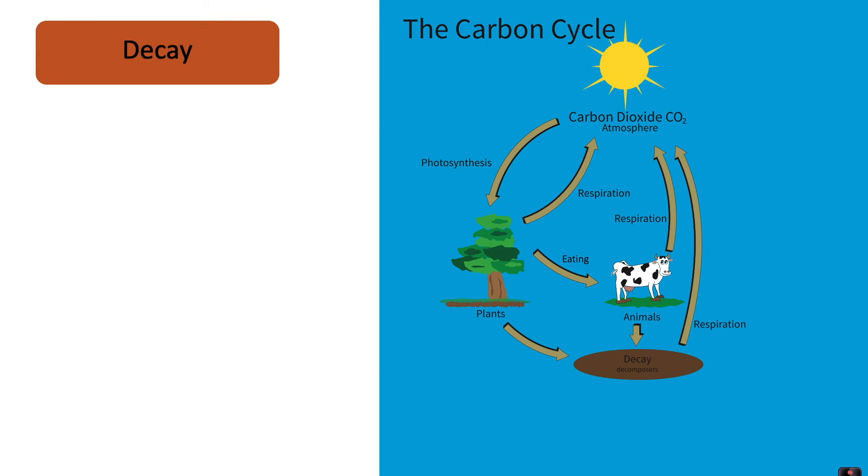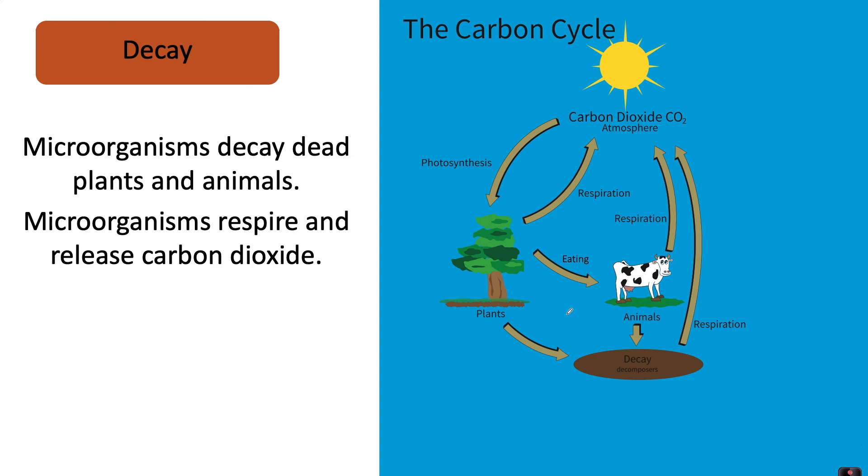Another process that includes respiration is decay. Microorganisms decay dead plants and animals, and microorganisms respire and release carbon dioxide. When decay happens, decomposers break down plant and animal matter, and whilst doing that they are also respiring. They release carbon dioxide back into the atmosphere when breaking down carbon compounds.